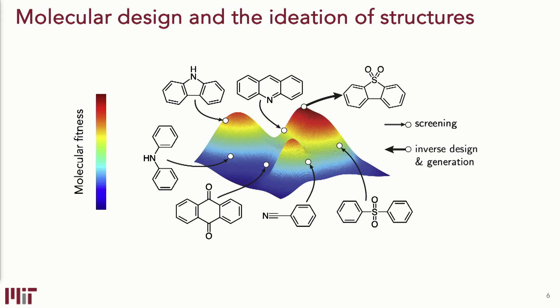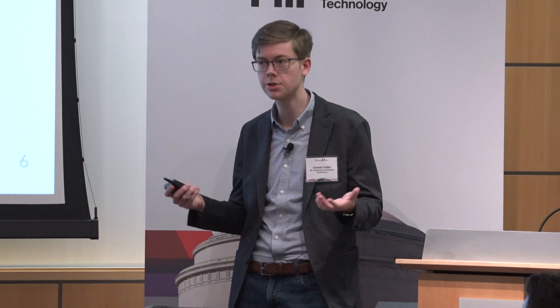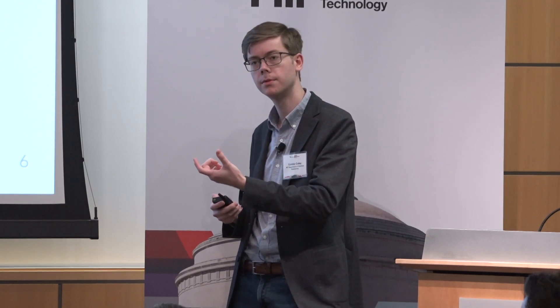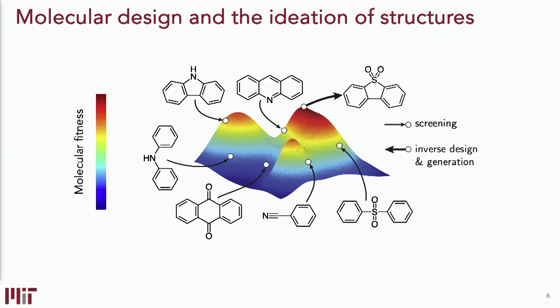The promise of generative modeling and inverse design is to take this relationship and invert it. If we can map structure to function, why can't we map function to structure? Can we just take this landscape and directly propose which molecular structures are predicted to exist at these maxima? This is really the idea behind generative design for molecular design.